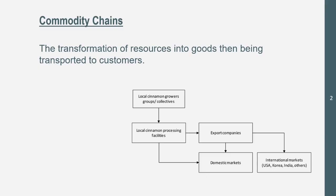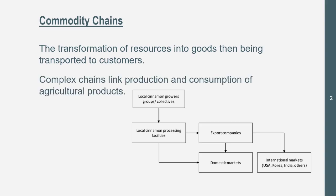Let's get into commodity change, which is a process — not transportation, but transformation of resources into goods — then being transported to the customers. Complex commodity chains link production and consumption of agricultural products.